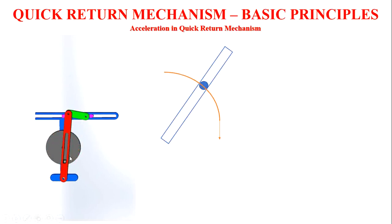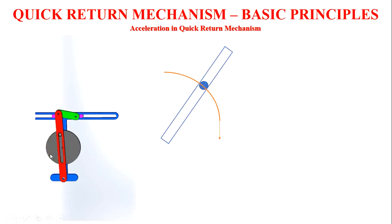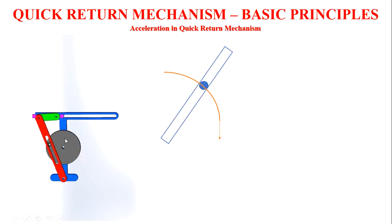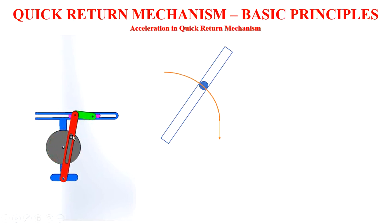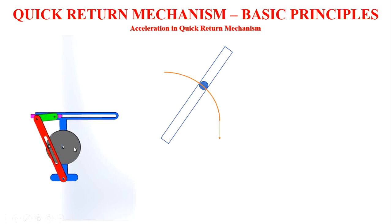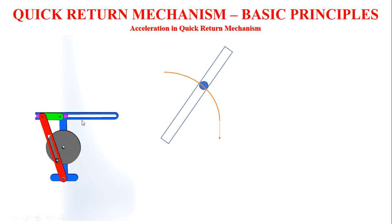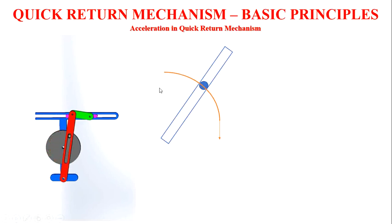But if you consider the coincident point with respect to the crank, it is a rotating element. So compared to normal linear acceleration, this point has linear acceleration. But conceptually, since this point is rotating in a circle while at the same time sliding in the slotted bar, one more acceleration component should also be acting on it.